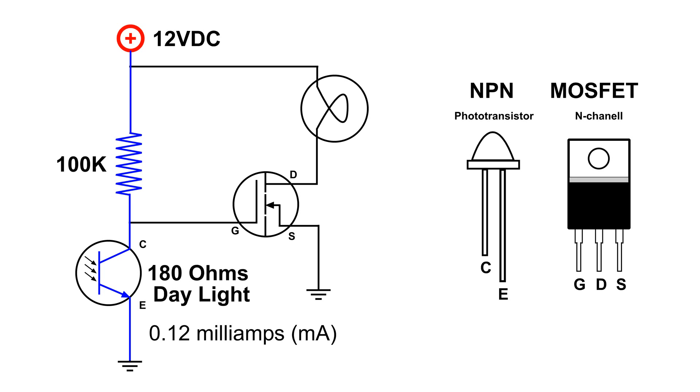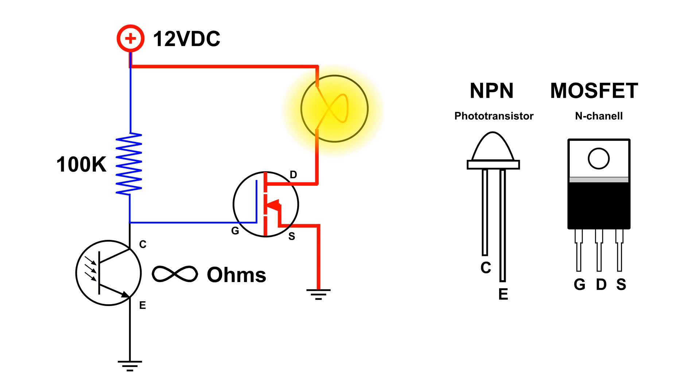Now when we cover the phototransistor, it goes to almost infinite ohms, which means it's acting like it's not even there. So now we've got bias on that gate of the MOSFET, which turns on the light or the LEDs, whatever you have hooked up to the drain of the MOSFET and the 12 volt power supply. Here's a demo showing that.